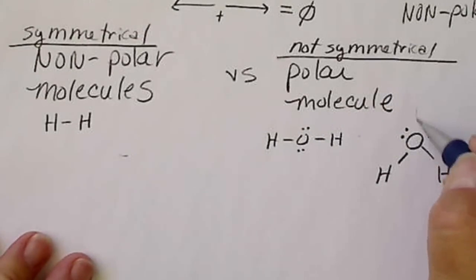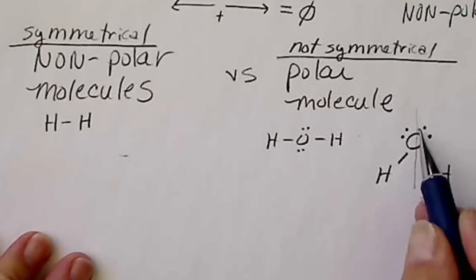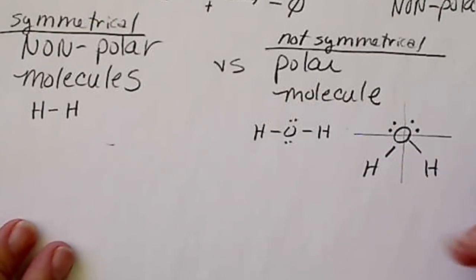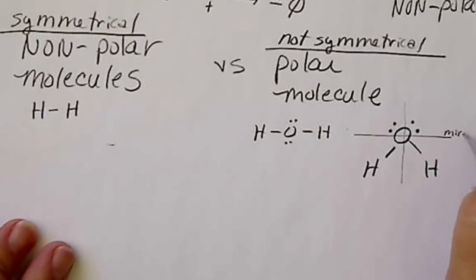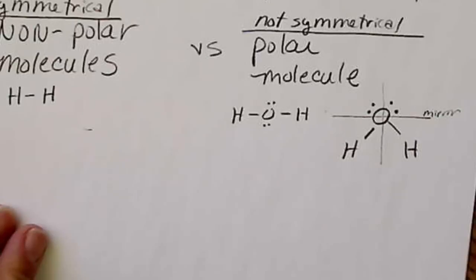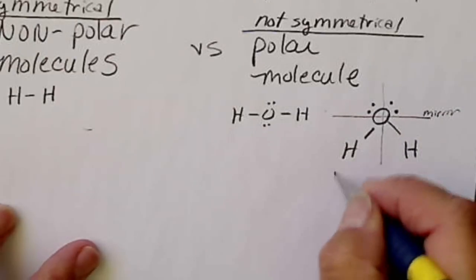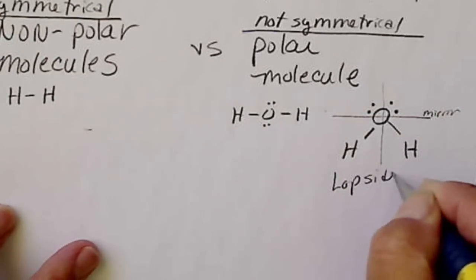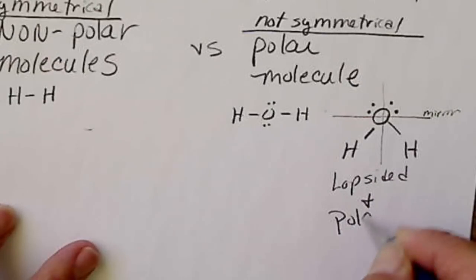It looks the same in this direction if a mirror was in this direction, but it does not look the same if we put a mirror right here. The reflection across the mirror is different, so this molecule is lopsided and polar.